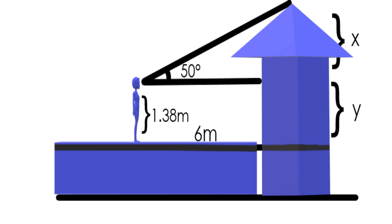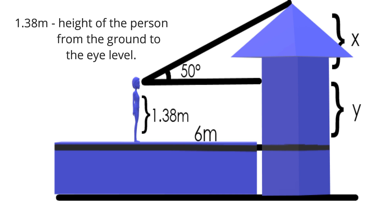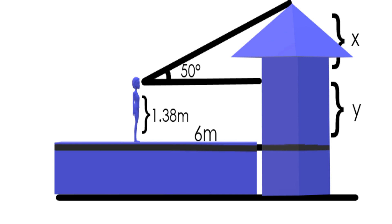1.38 meters is the height of the person from the foot to the eye. I labeled the measurement of the unknown side with X and Y — Y to the 1.38 meters and variable X to the remaining unknown measurement.